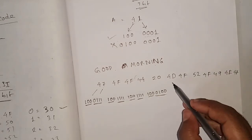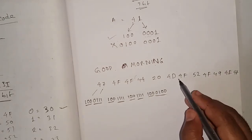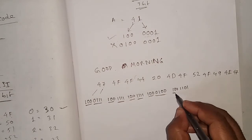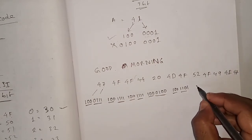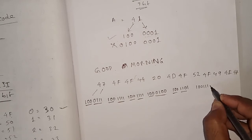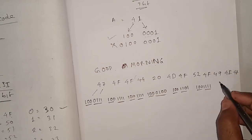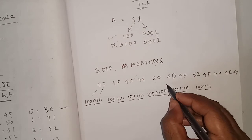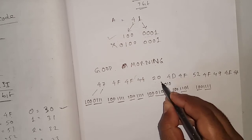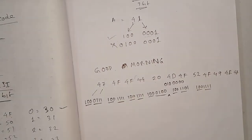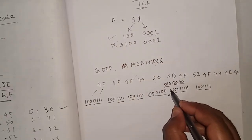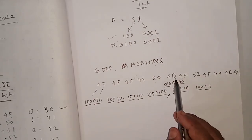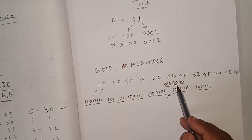Continuing: D (44): 100 and 0100 → 1000100. I missed writing the space (20) after D — I'm sorry. 2 = 010 and 0 = 0000 → 0100000. We include that space value here. After space, continuing with Morning.